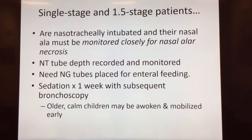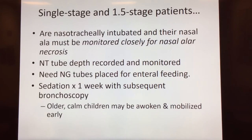These patients need NG tubes. If they don't have a G tube already for enteral feeding, we usually place those in the operating room. They'll need a post-operative KUB in order to check the placement of that, if that's something your institution does as a standard. These patients will need sedation for one week in the pediatric ICU with subsequent bronchoscopy. Older and calm children may be awoken and mobilized early, if they are able to tolerate nasotracheal intubation and walk around without being irritated by it.